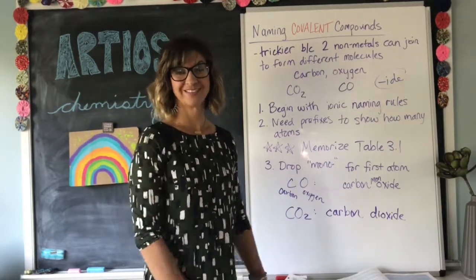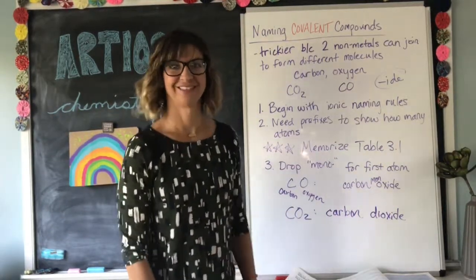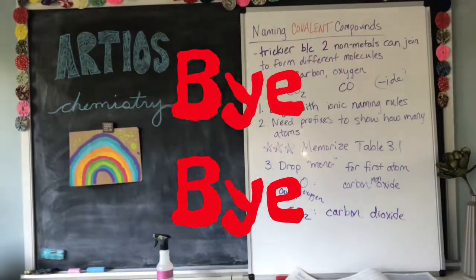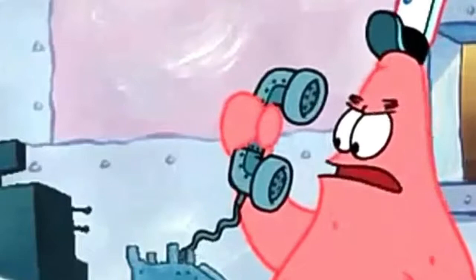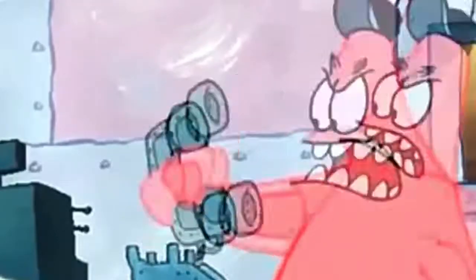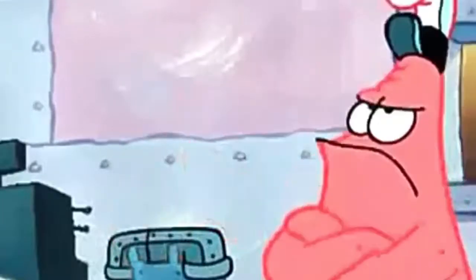Remember, the first step when naming a compound is just to figure out: is it ionic? Follow these rules. Or is it covalent? Follow these rules. That's it — that's module three. Good work.